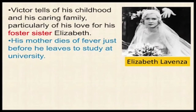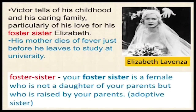Victor tells of his childhood and his caring family, particularly of his love for his foster sister Elizabeth. A foster sister is a female who is not a daughter of your parents but is raised by your parents — also called an adoptive sister. Here, Elizabeth Lavenza was the adoptive sister of Victor Frankenstein. His mother dies of fever just before he leaves to study at university — a very tragic incident.